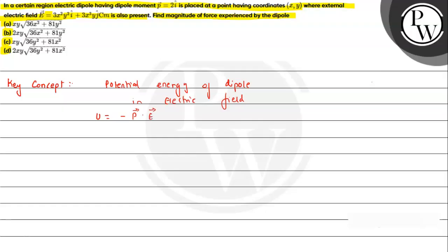If we differentiate this expression, we can have the result as dU by dr, and that will be equal to d by dr of P bar dot E bar. Here dU by dr will be representing, since electric field is a conservative force.